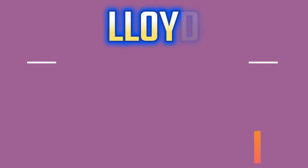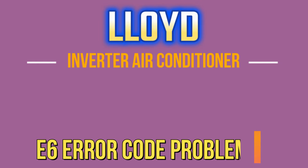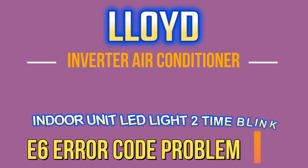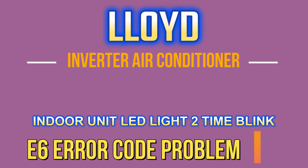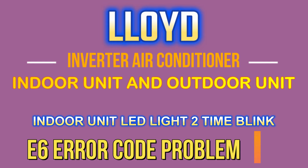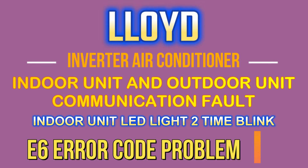In today's video, I am going to tell you that if you have a Lloyd inverter AC and an E6 error is coming in that AC, and the running light of the outdoor unit is blinking two times, then how can you fix this error. This error is an indoor unit and outdoor unit communication fault.